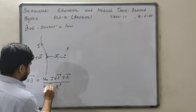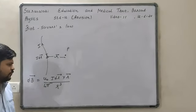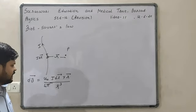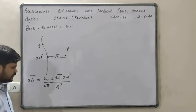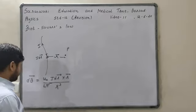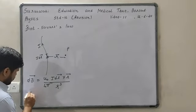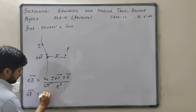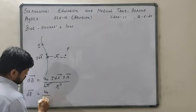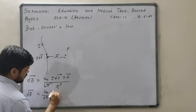This is the Biot-Savart law. The complete formula is dB = μ₀ upon 4π × I DL cross R upon R cube. This is the Biot-Savart law.